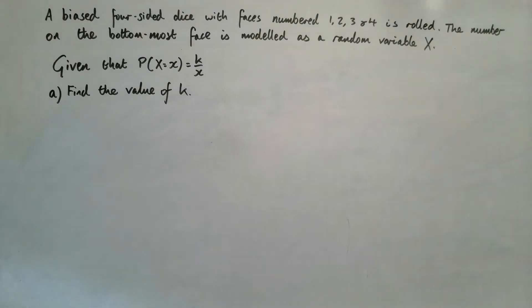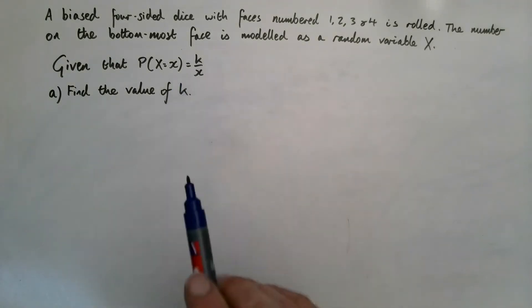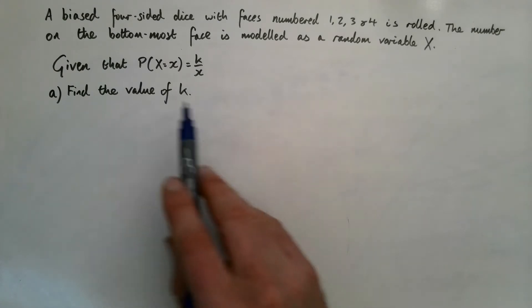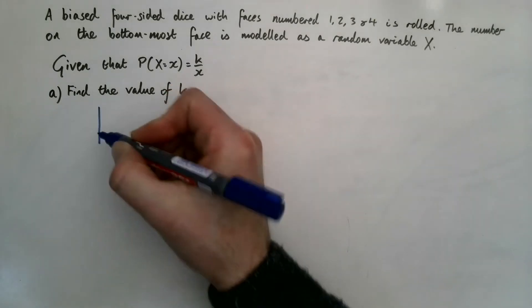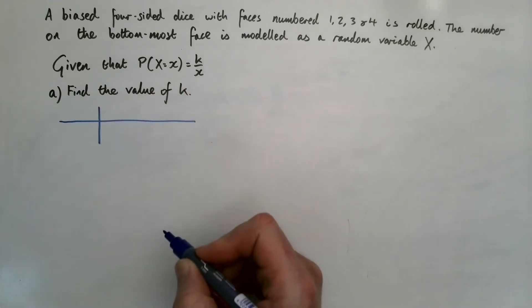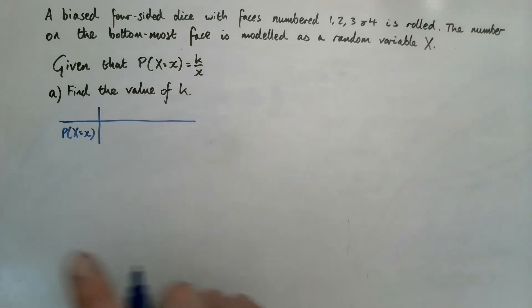Here's a problem: a biased four-sided dice. They haven't told us how biased it is, so we must look at the symbols carefully. The number on the bottom-most face is modelled as x. Let's make a table and think about what's going on — the probability is modelled in terms of k.